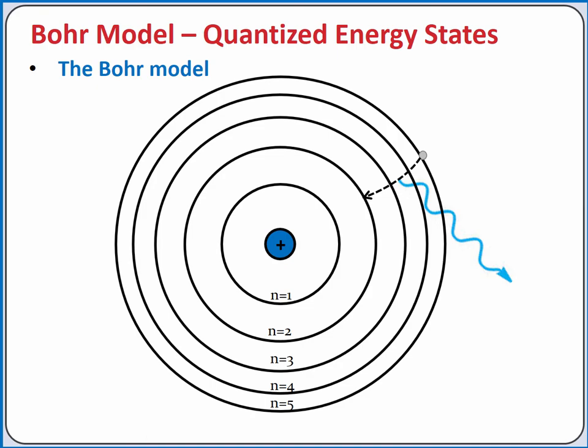When it drops from a higher to a lower energy level, it emits a photon with an energy equal to the difference in energy between the two energy levels.